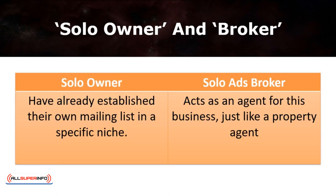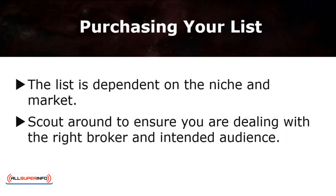You usually purchase your targeted audience or intended mailing list via a Solo Owner who has already established their own mailing list in a specific niche. You may also contact an ads broker who acts as an agent for this business, just like how a property agent works. When you choose to purchase your list through either of these two channels, always bear in mind that the lists are dependent on the market or niche. You need to scout around to ensure you're dealing with the right broker who provides you with your intended audience.